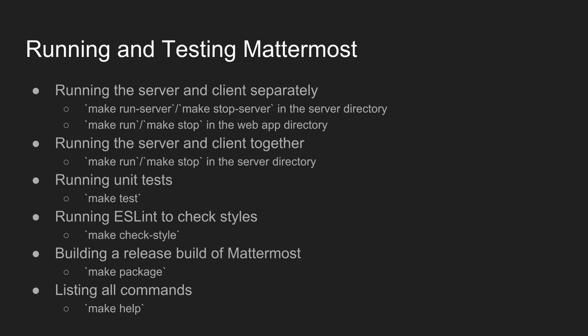You can run unit tests using make test, either from the web app or server directories — you probably only care about the web app ones at this point. You can run ESLint to check styles, which I recommend doing if you're going to submit a pull request, because the Jenkins server will automatically fail any builds that have style errors.